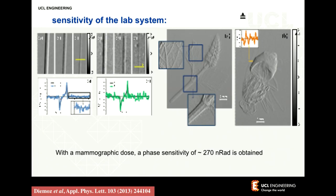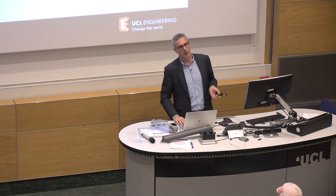Now you have two images: the phase image and the attenuation image. The phase image for us is a map of the refraction angles caused by every part of the specimen. Once you have that, you can try to understand what's the minimum refraction angle that you can detect. In the lab, constrained to a dose which is about a mammographic dose, we measure about 250 nano-radians — a quarter of the micro-radian I mentioned before. That's the angle subtended by a quarter of a millimeter placed a kilometer away, resolved here at UCL. If you go to a synchrotron you can do much better, but then you have to spend several hundred million pounds.